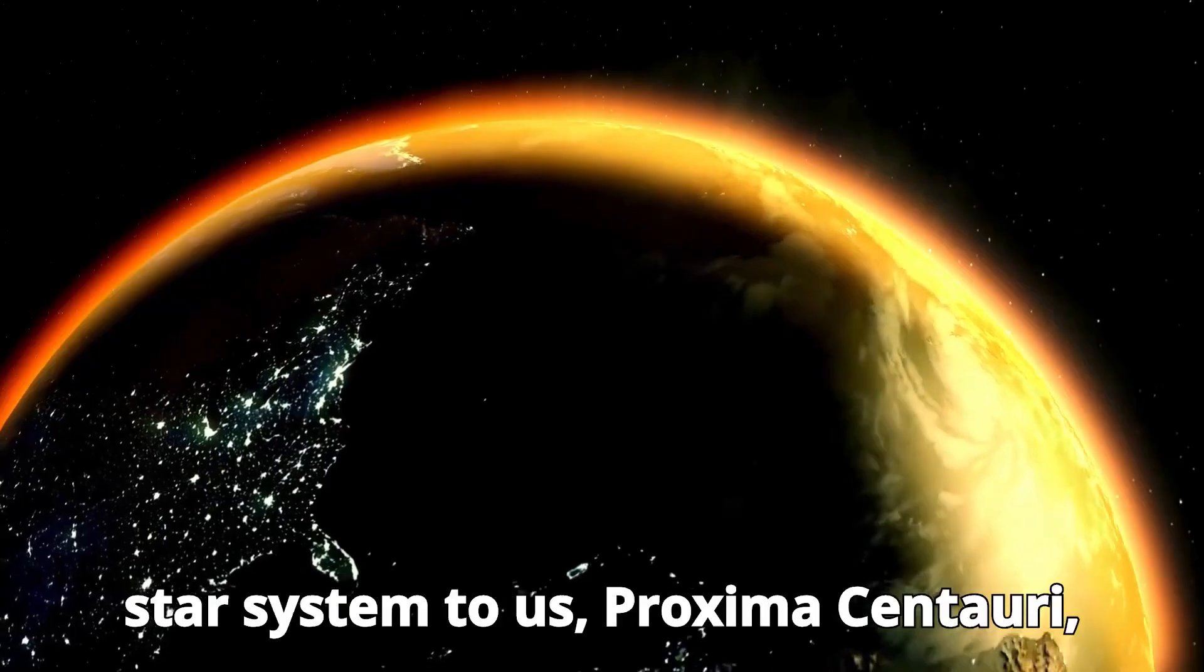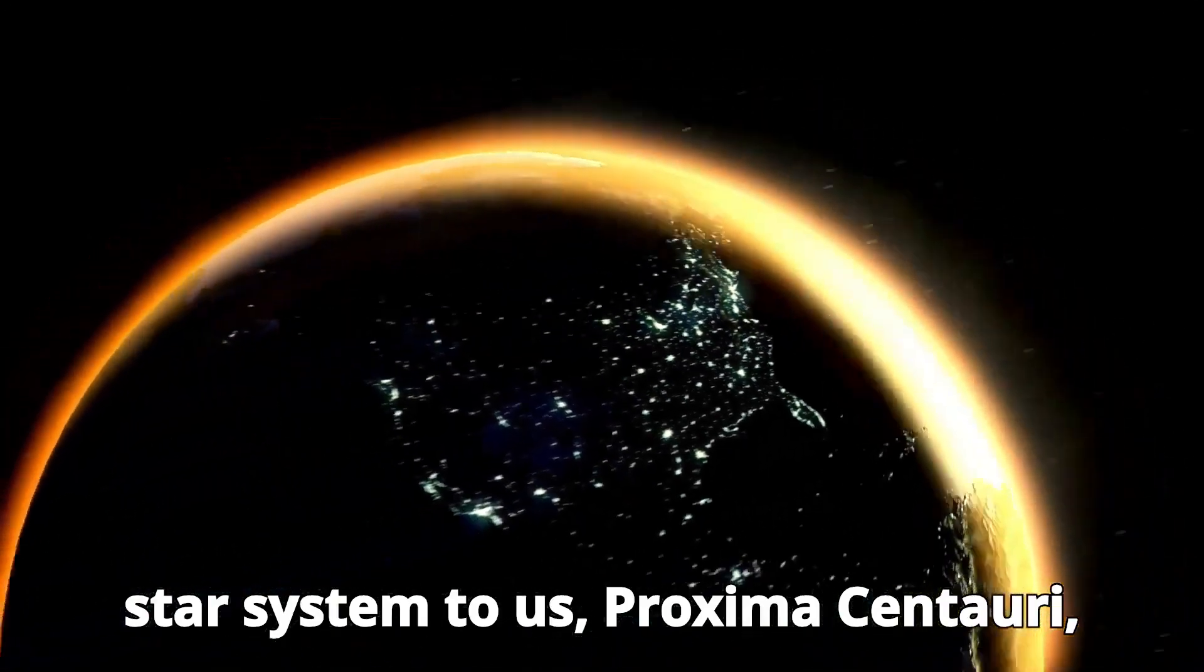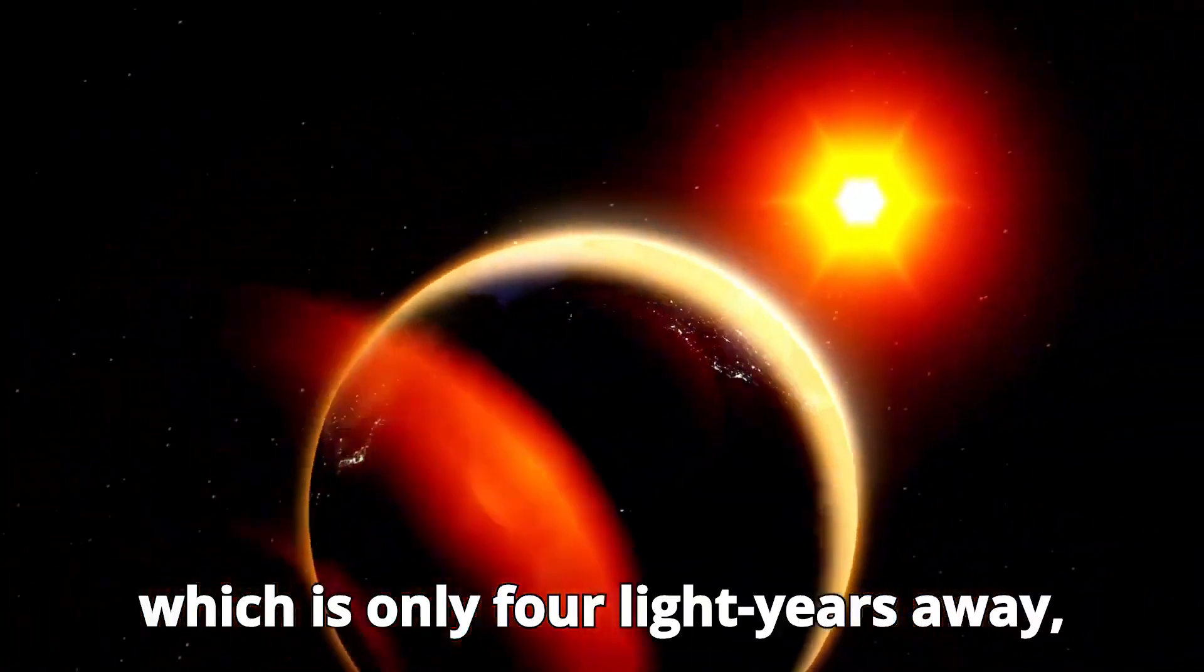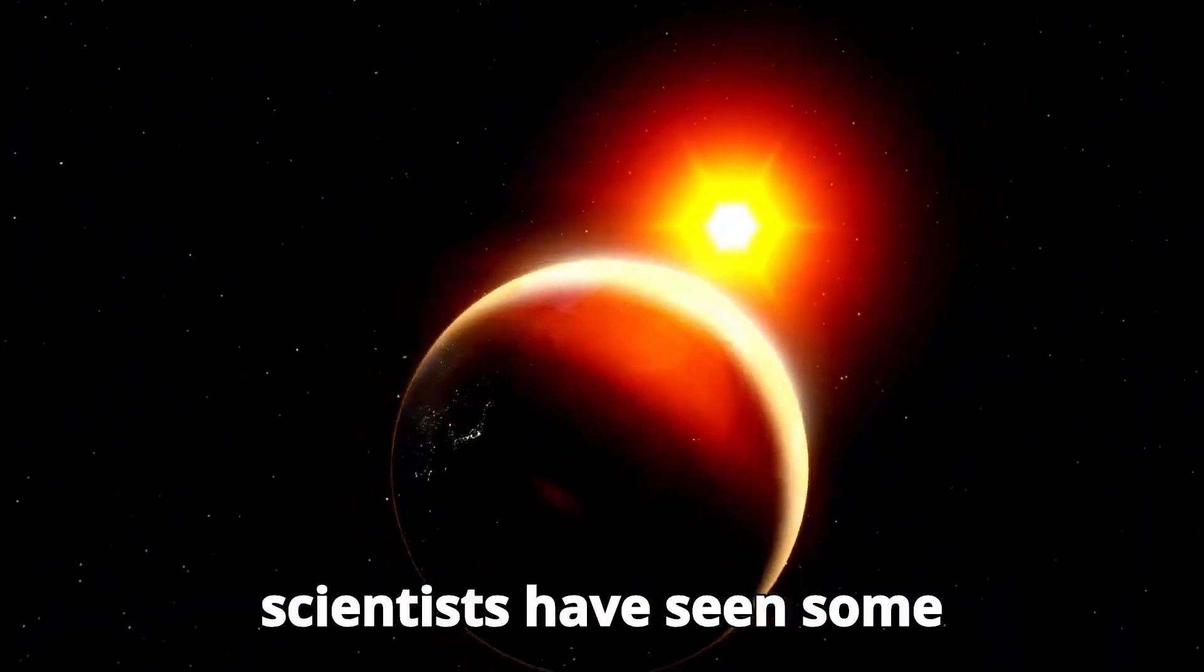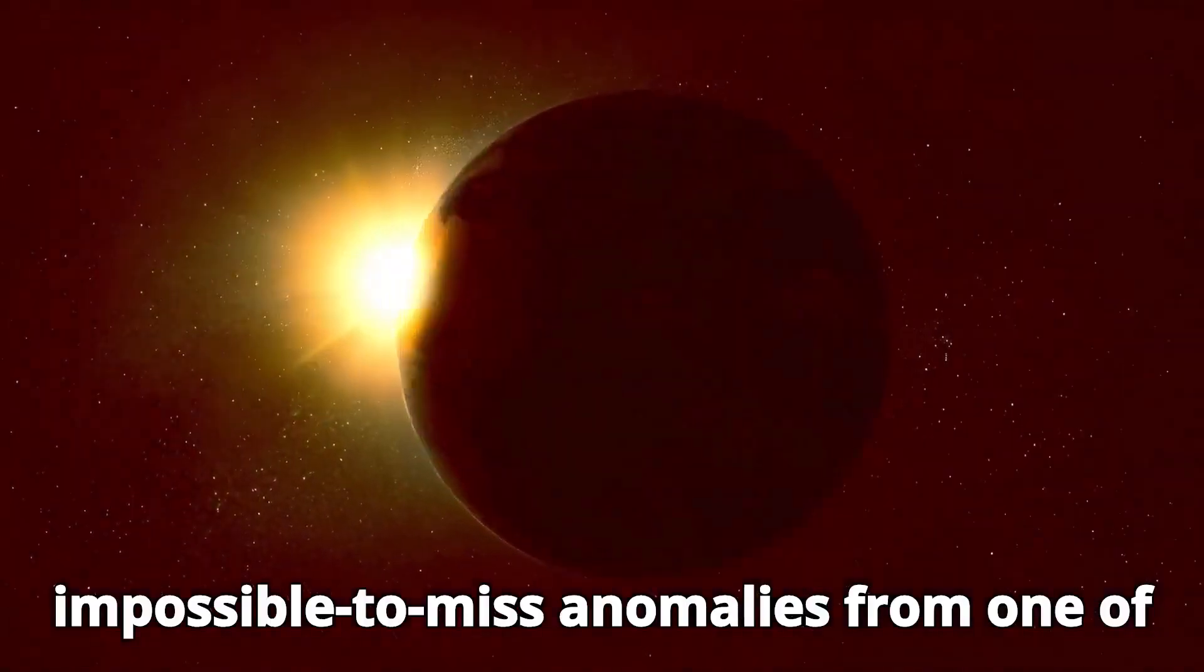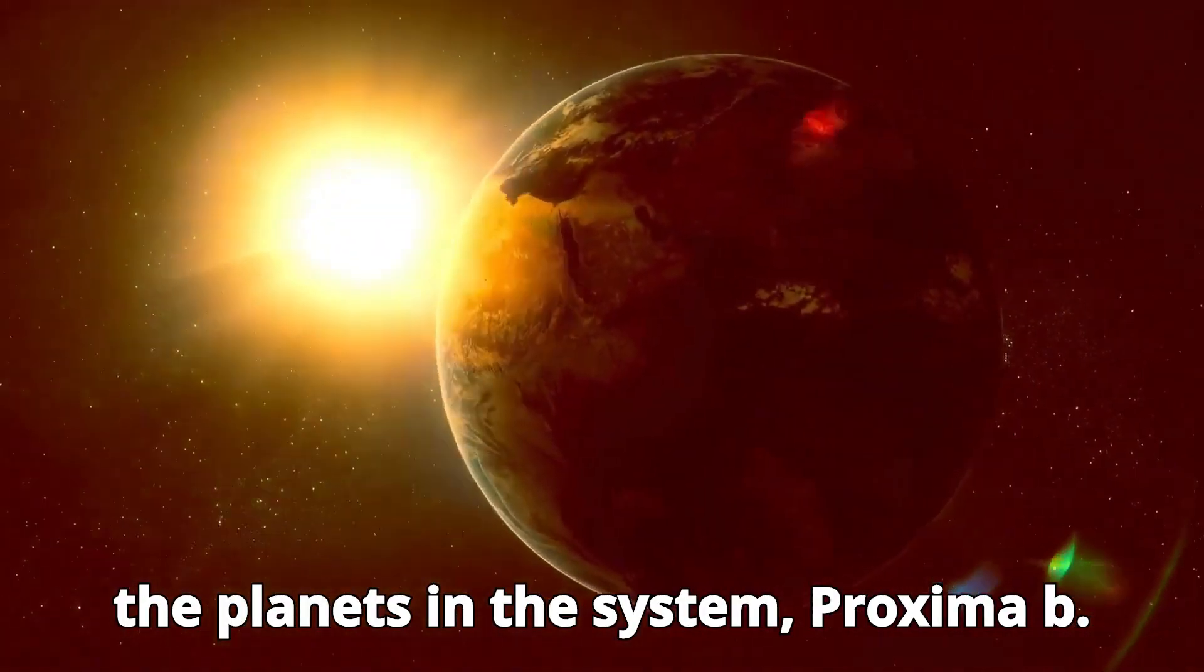While observing the closest star system to us, Proxima Centauri, which is only four light-years away, scientists have seen some impossible-to-miss anomalies from one of the planets in the system, Proxima b.